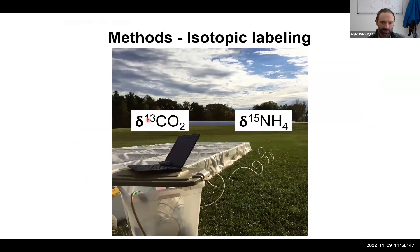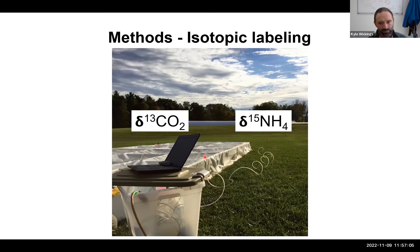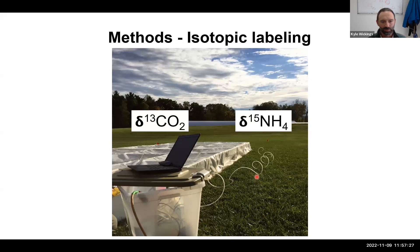Natalie also used stable isotopes as tracers. She introduced isotopically enriched carbon via labeled CO2 that plants take up during photosynthesis, and isotopically enriched nitrogen through labeled fertilizer taken up by roots. This method integrates a tracer into the plant so you can trace that plant material anywhere it goes — into organisms, into soil fractions like pools of organic matter — mapping where carbon and nitrogen go once they leave the plant.